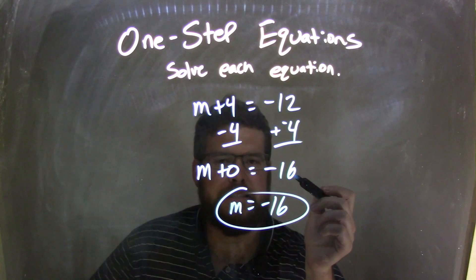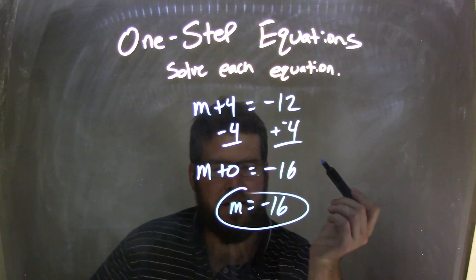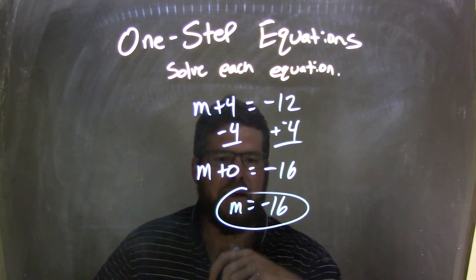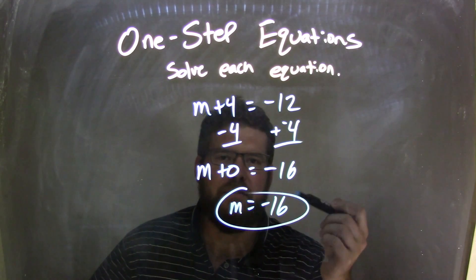We have m plus 0 equals negative 16. Well, adding a 0 doesn't change anything. So now we're left with our final answer of m equals negative 16. Thank you.